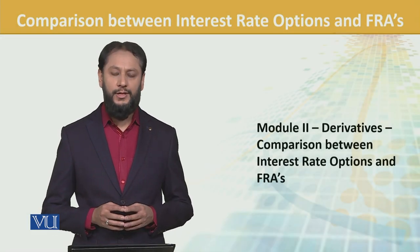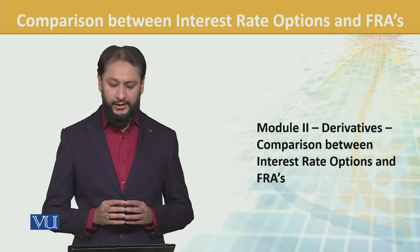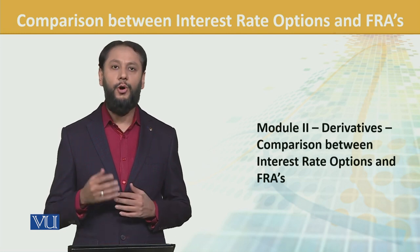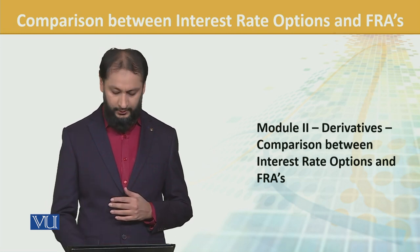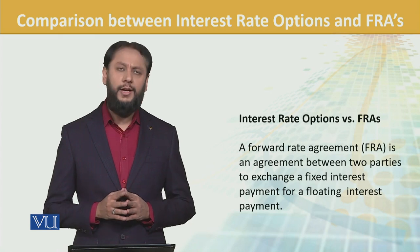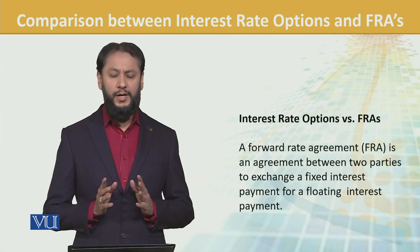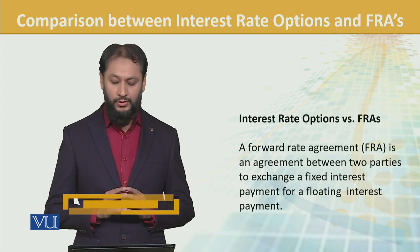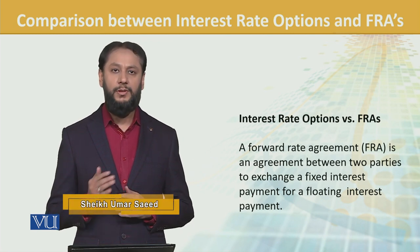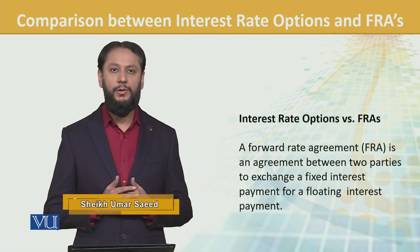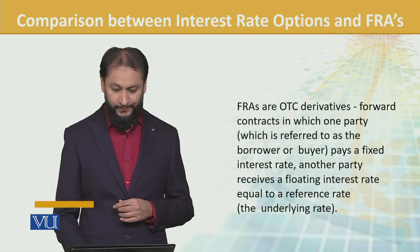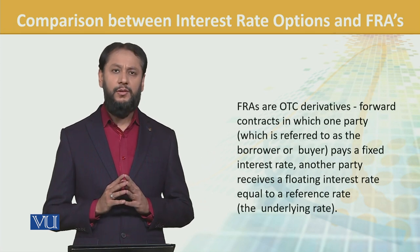Bismillahirrahmanirrahim. We are doing derivatives — a comparison of interest rate options and FRAs. FRAs are forward rate agreements. A forward rate agreement is an agreement between two parties to exchange fixed interest payments for a floating interest rate payment. One party pays fixed and the other pays floating. FRAs are OTC derivatives.